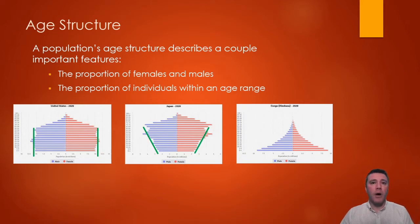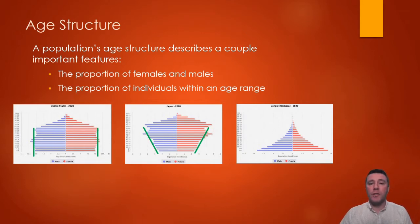In the final example, the Congo has its largest portion of the population represented by the youngest individuals. A population like this, with its pyramid shape, is one that would be predicted to experience rapid, positive growth.